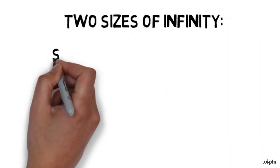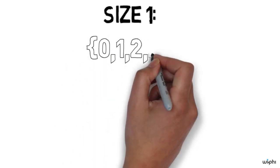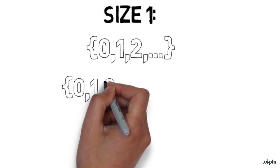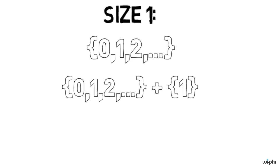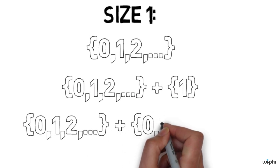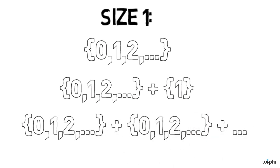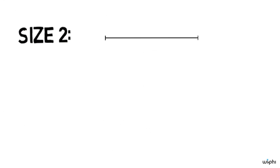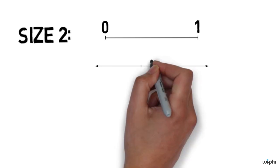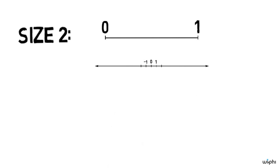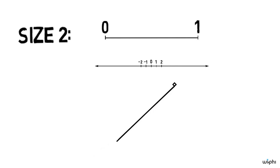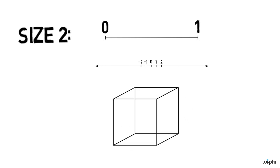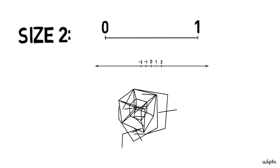So we've identified two sizes of infinities so far. The size of the natural numbers — which we know is just as big as the natural numbers plus one additional element, and just as big as as many copies of the natural numbers as there are natural numbers. And we've identified a bigger size: the size of the real numbers between 0 and 1. As it turns out, there are exactly as many real numbers as there are real numbers between 0 and 1, exactly as many points on a line as there are real numbers, exactly as many points on a plane as there are real numbers, exactly as many points on a cube as there are real numbers, and exactly as many points in a hypercube as there are real numbers.